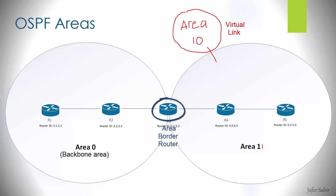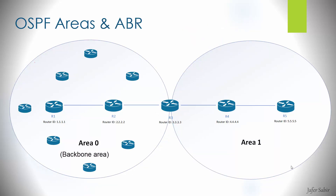In effect, the ABR tells Area 1: anything destined for the summary network, just send it to me and I will handle it. This means Area 1 doesn't need to worry about specific subnets in Area 0 — whether a specific subnet is on Router 1 or Router 3. Area 1 only needs to know the summary network is reachable via the ABR. The ABR itself must know everything about both areas and holds databases of all links in both, being informed of any topology changes.